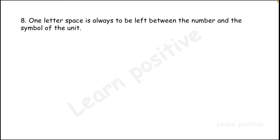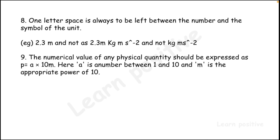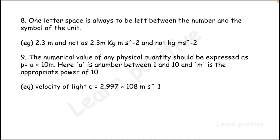The eighth convention: one letter space should always be left between the number and the unit symbol — write '2.3 m', not '2.3m'. The ninth: the numerical value of any physical quantity should be expressed as p = a × 10^m, where a is a number between 1 and 10 and m is the appropriate power of 10. For example, the velocity of light is 2.997 × 10⁸ m·s⁻¹.